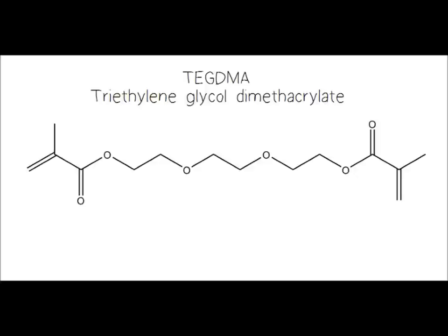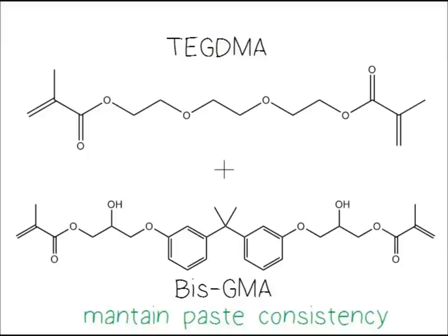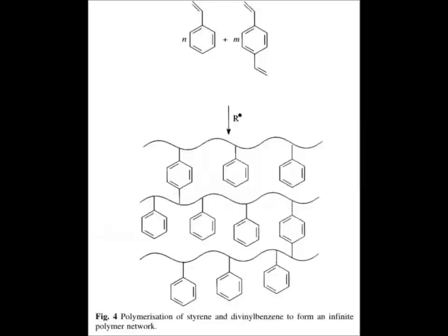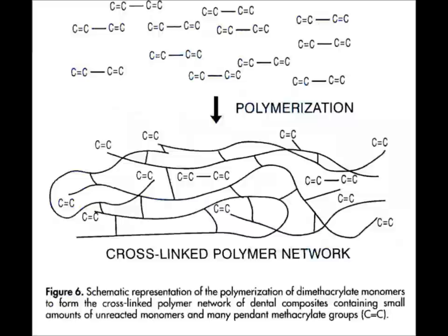The second monomer is triethylene glycol dimethacrylate, or TEGDMA. It has low viscosity and is therefore usually mixed with BisGMA to maintain a paste consistency suitable for direct application. It also helps to increase the crosslinking density in the composite resin paste. Crosslinked polymers are polymer chains connected to other polymer chains by covalent bonds, which is what makes the end product of composite resin rigid.